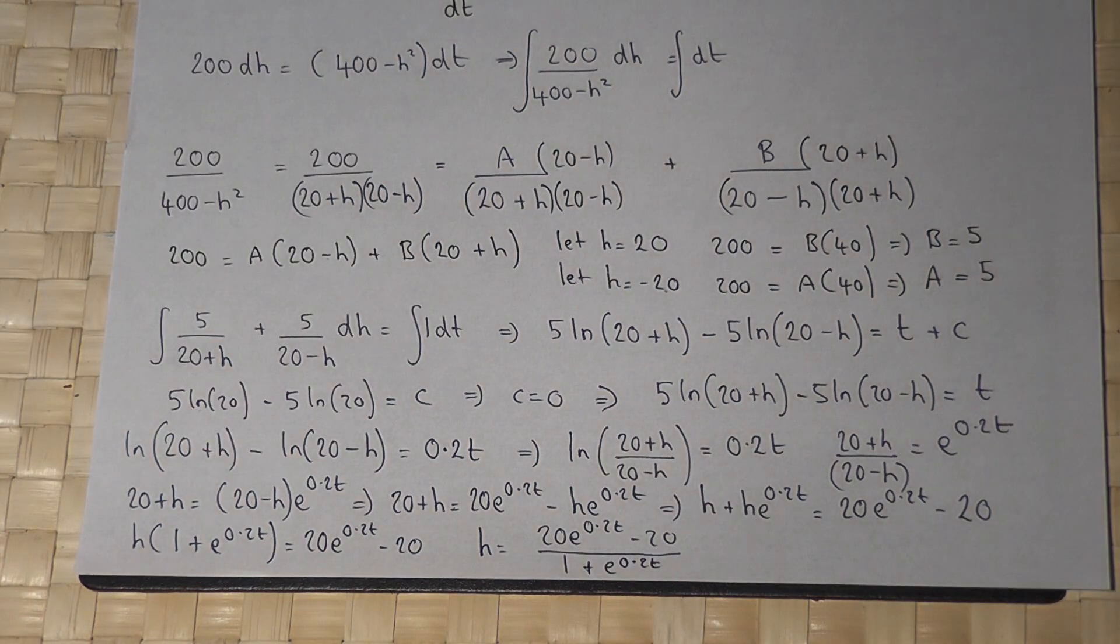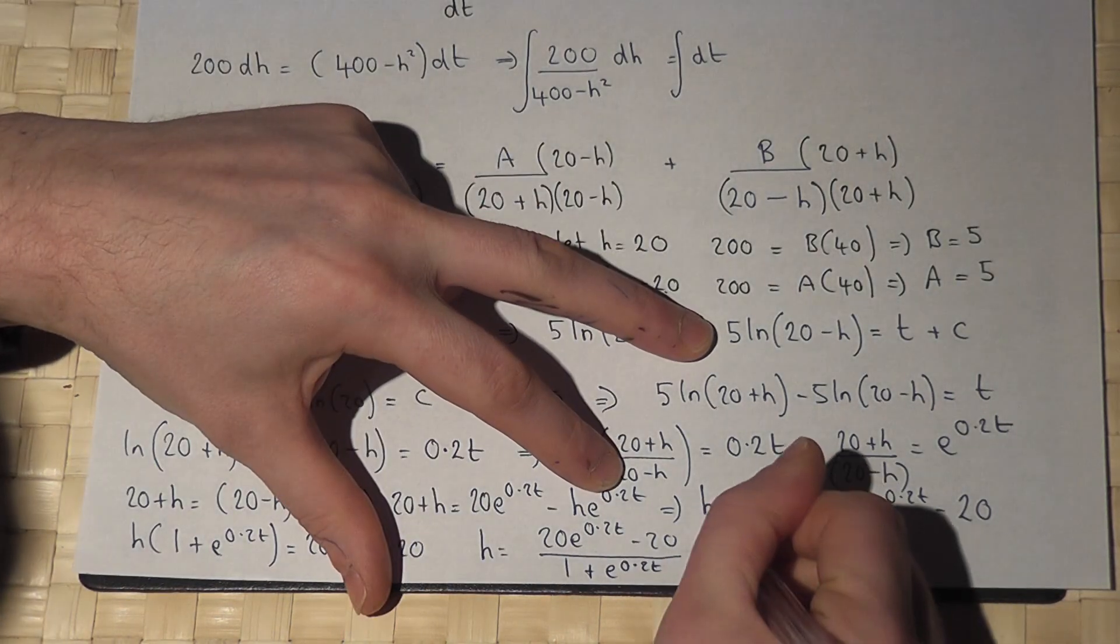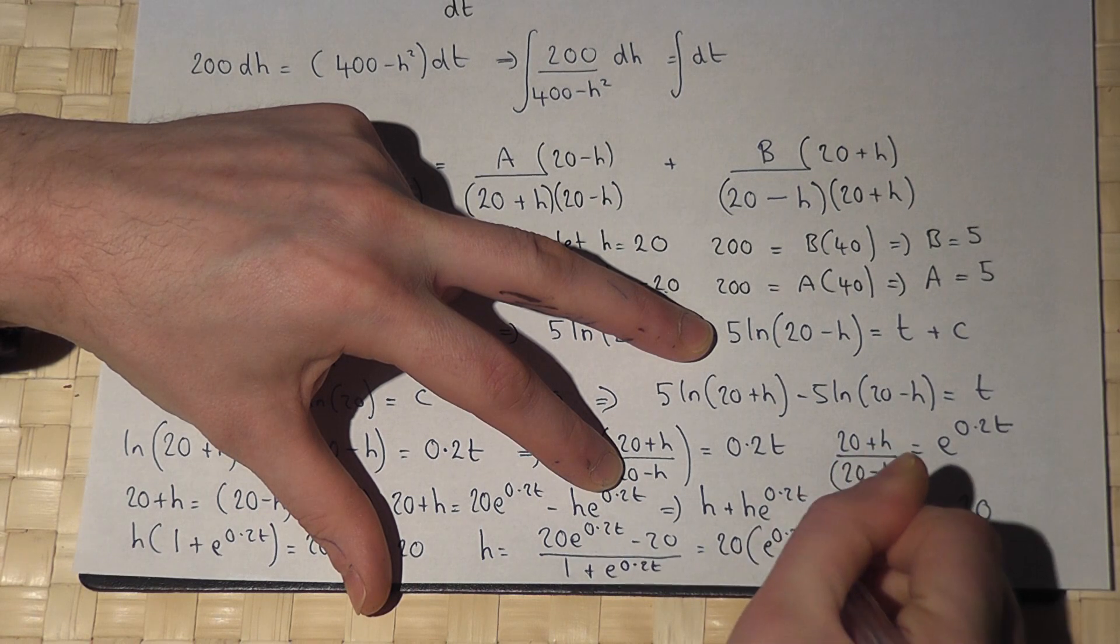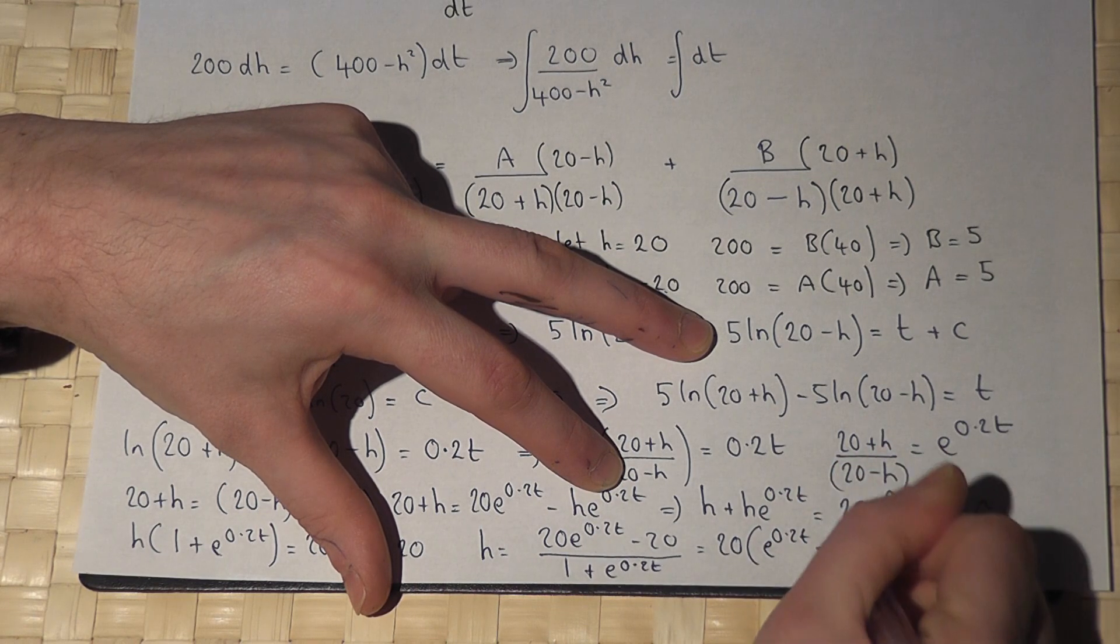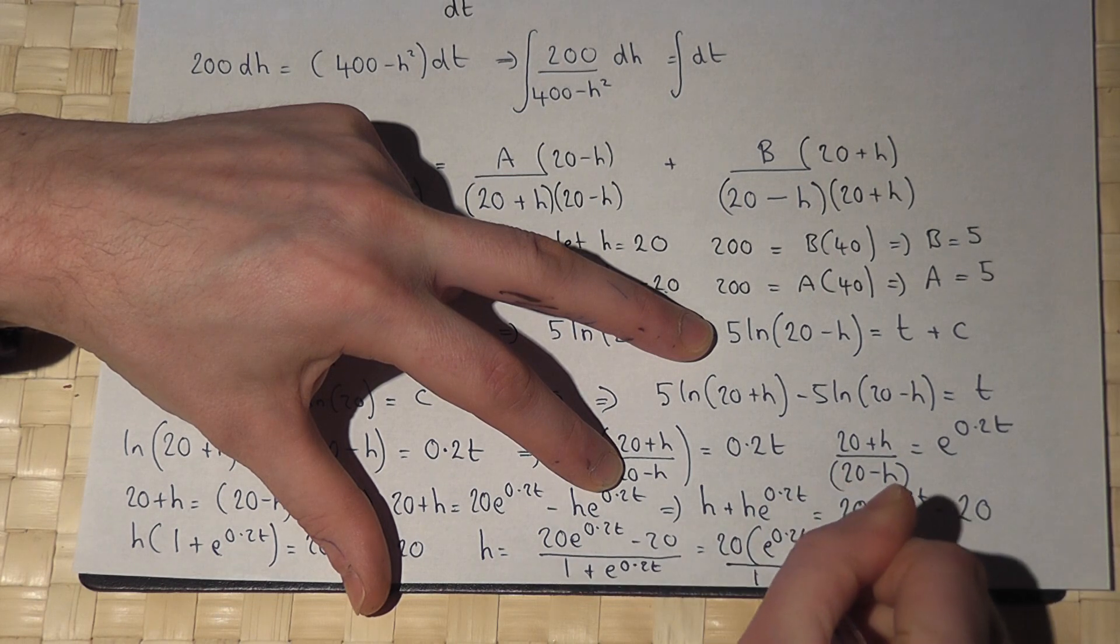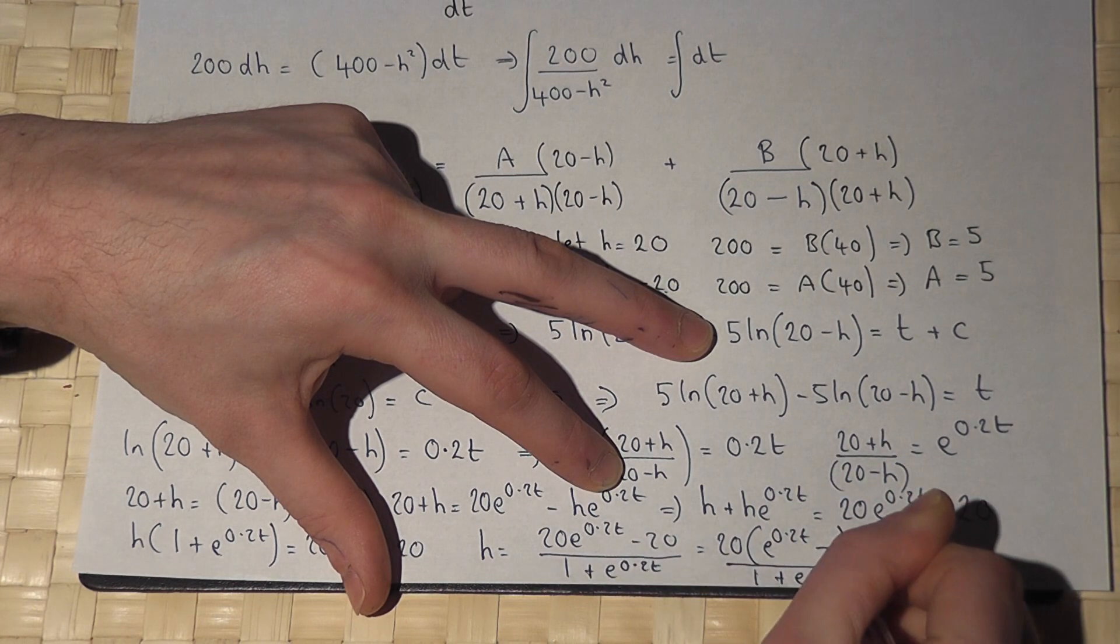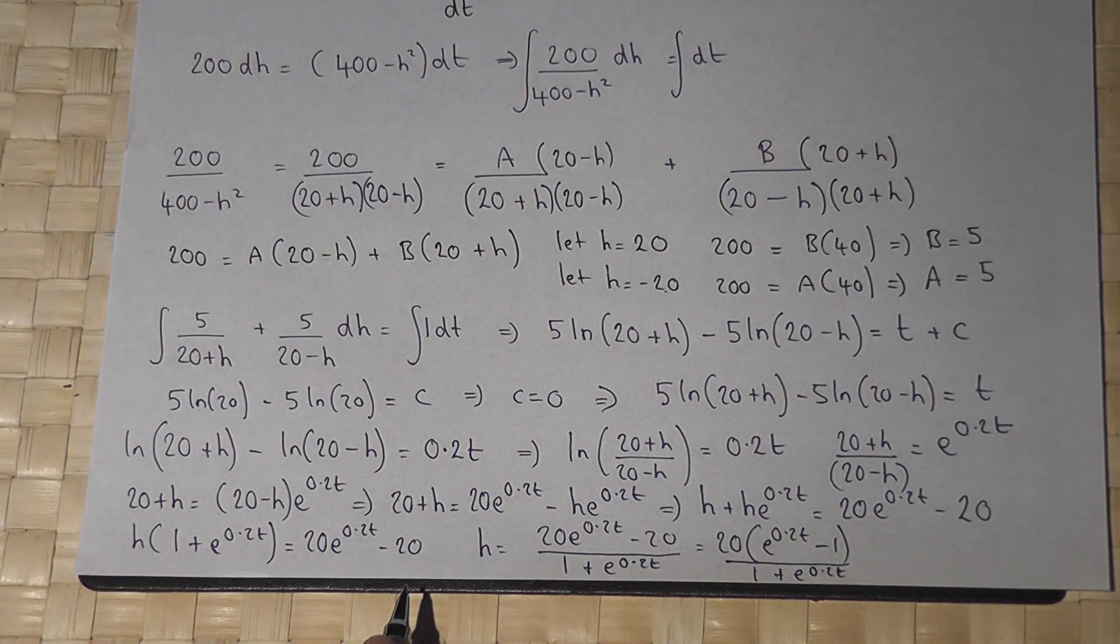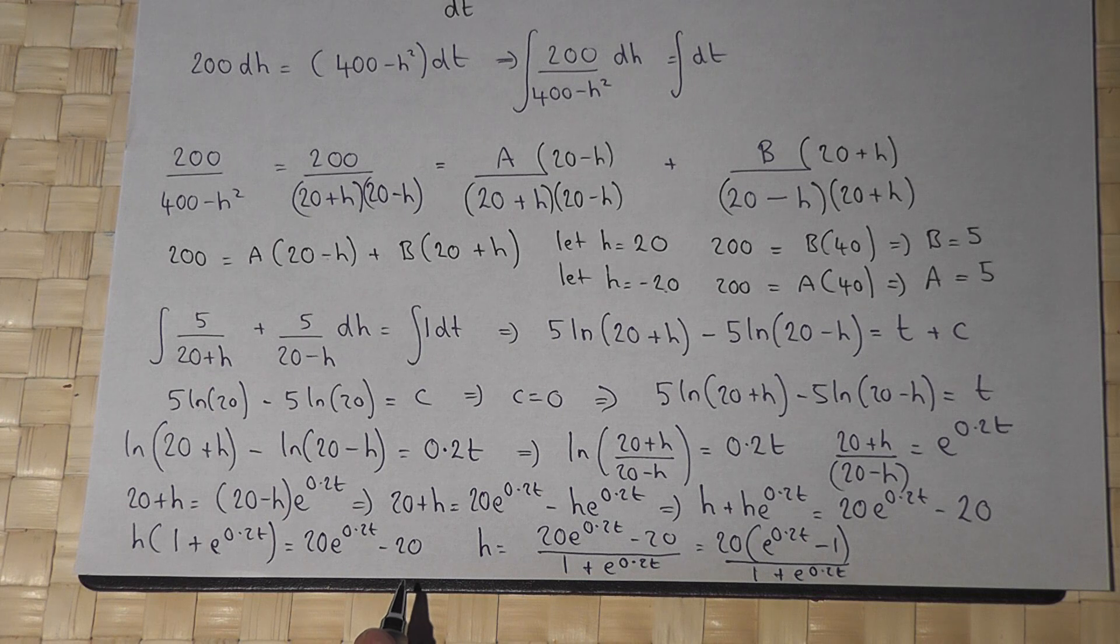I can then pull out a factor of 20, so h equals 20 times e to the 0.2t minus 1, all over 1 plus e to the 0.2t. And that is the solution to the differential equation.